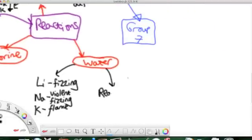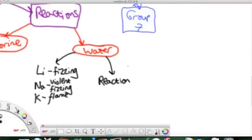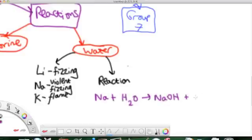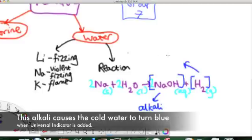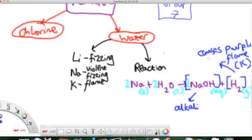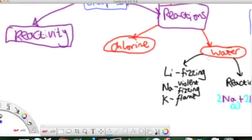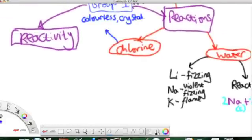In water, lithium fizzes, sodium gives violent fizzing, and potassium gives a purple flame. And the reaction can be shown as the metal plus water goes to the metal hydroxide plus hydrogen. State symbols and balancing is important for four marks. And if you put universal indicator inside the water afterwards, we see it turns blue, showing the sodium hydroxide is an alkali. The reaction increases as you go down the group.